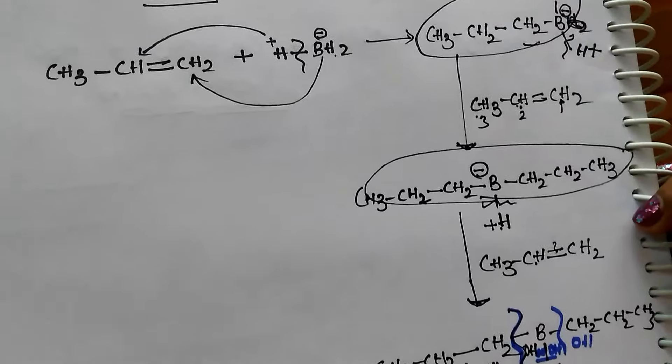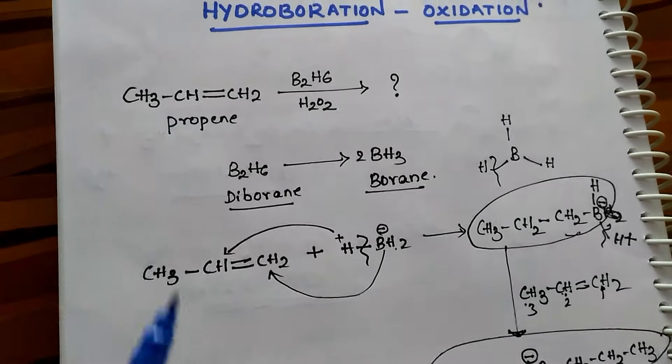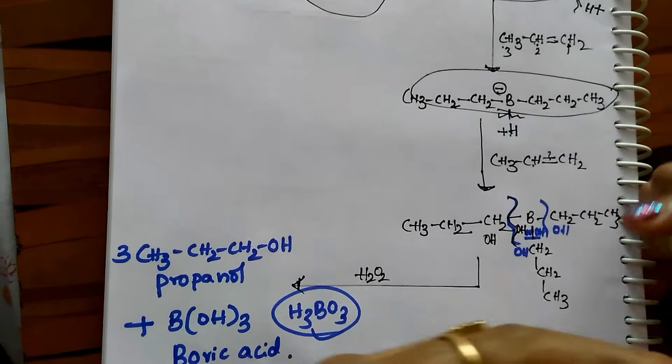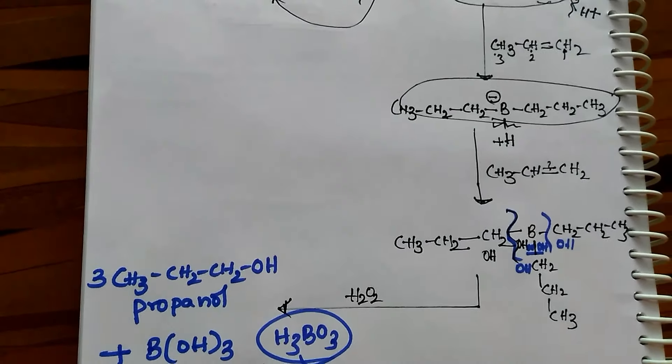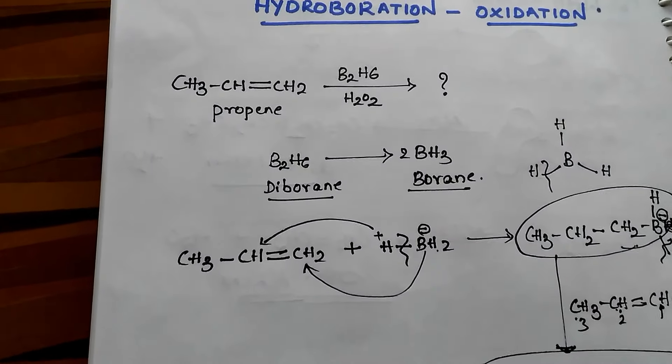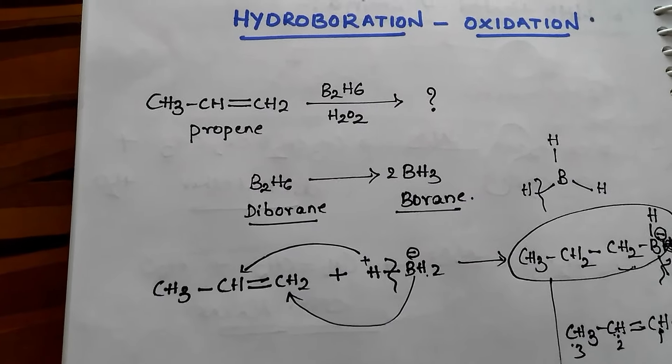So under hydroboration reaction we are converting propene into alcohols and we are getting boric acid also. Thanks for watching this video students. If you like this video please click on like button and subscribe our channel for getting more tips and tricks in chemistry. Thanks for watching.